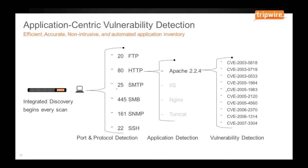An important byproduct of the profiling process is an automated application inventory. Tripwire IP360 can identify over 20,000 unique applications, and that application data is part of the database that's continuously available for reporting on vulnerabilities and their associated applications.